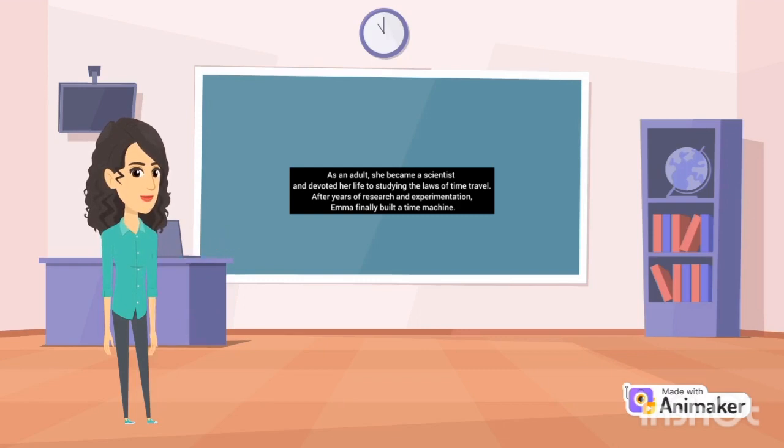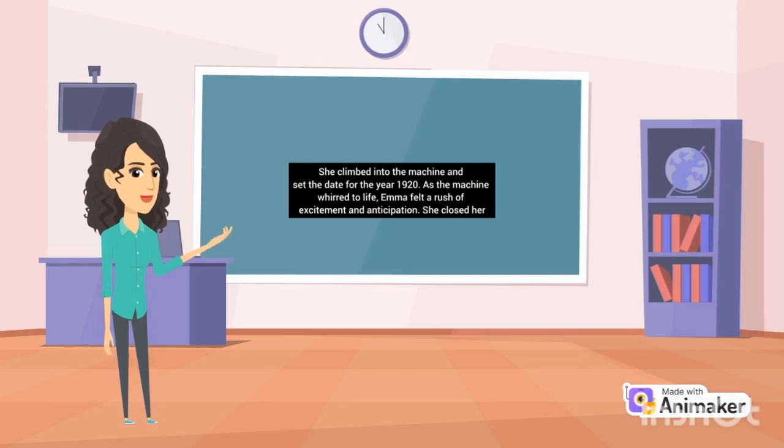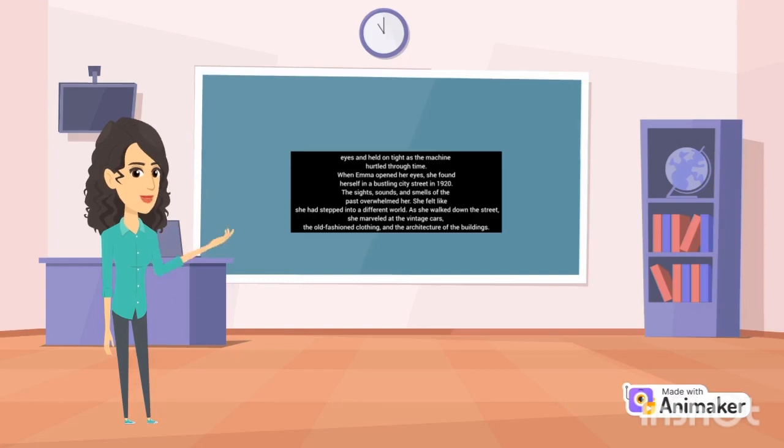After years of research and experimentation, Emma finally built a time machine. She climbed into the machine and set the date for the year 1920. As the machine whirred to life, Emma felt a rush of excitement and anticipation. She closed her eyes and held on tight as the machine hurtled through time.